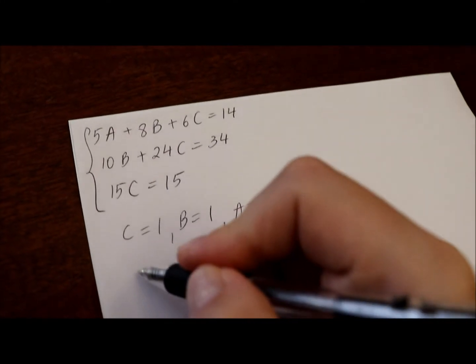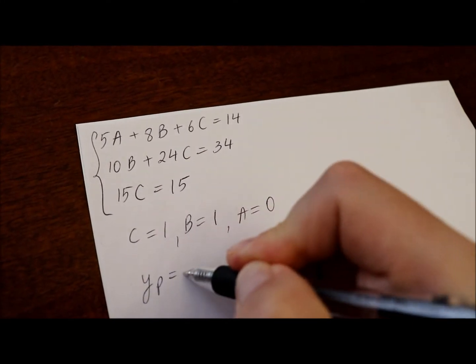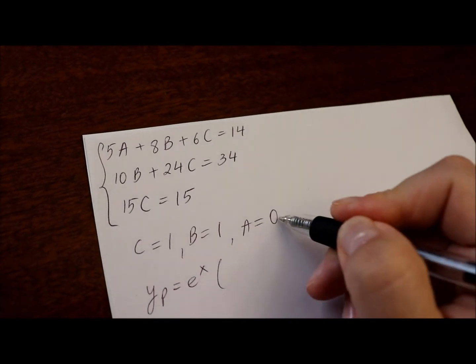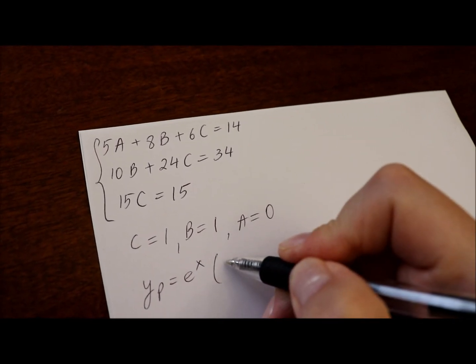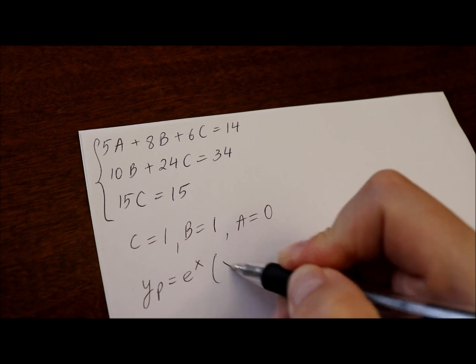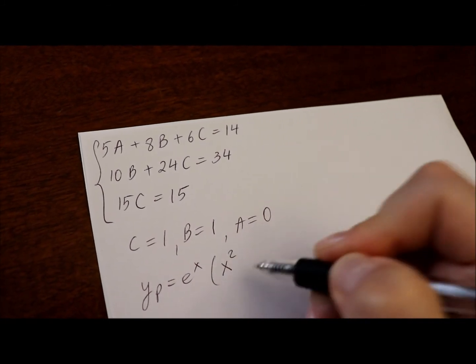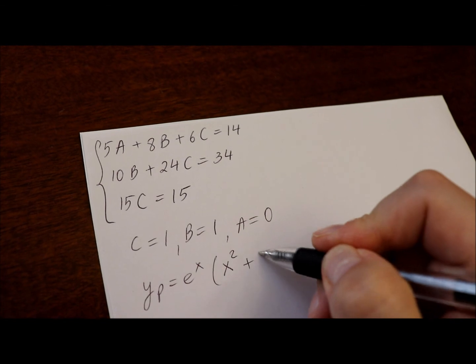That means the particular solution will be e to the x. Then, since we have 0 times x, we don't have that term. 1 times x squared plus 1 times x cubed.